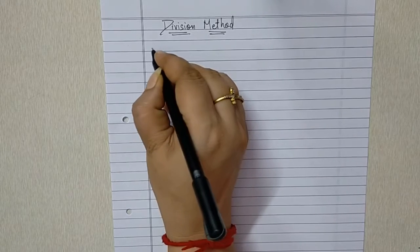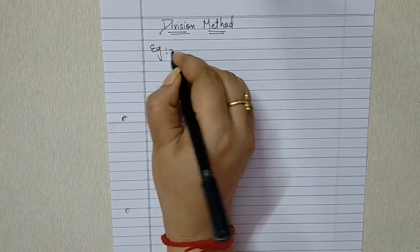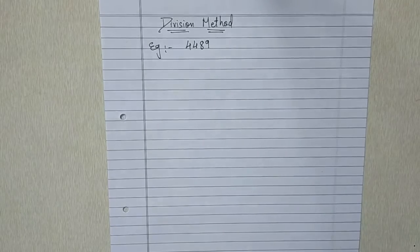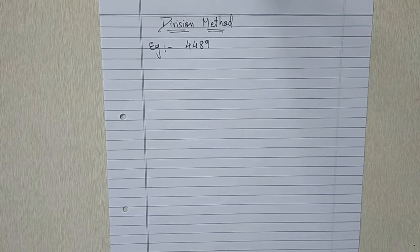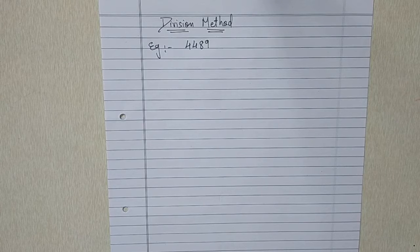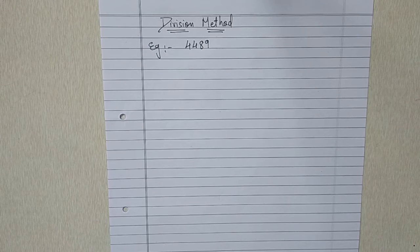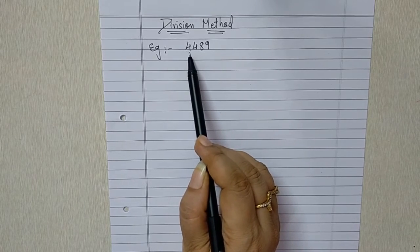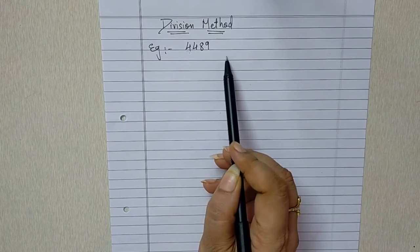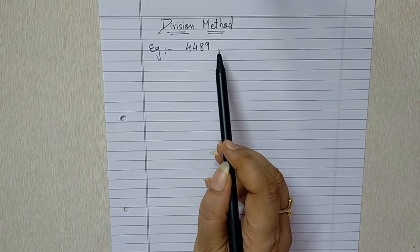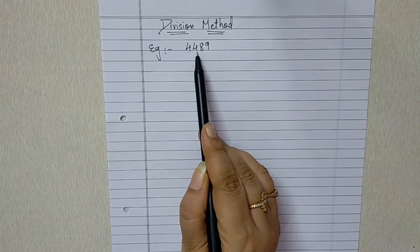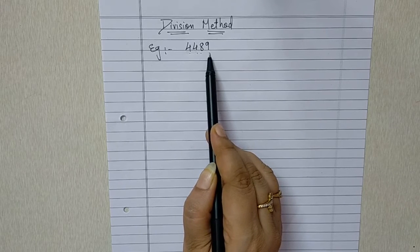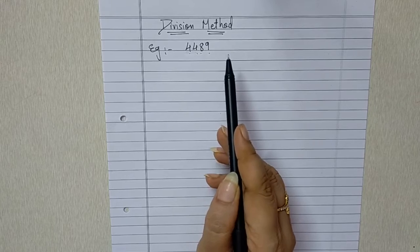So for example, let us take 4,489. Now here there is one rule which you need to follow that if your question is a three digit number, then you are going to take one number first and then the remaining two. And if your question is a four digit number, you are going to take first two numbers and then two numbers. We will be seeing the examples of both types.